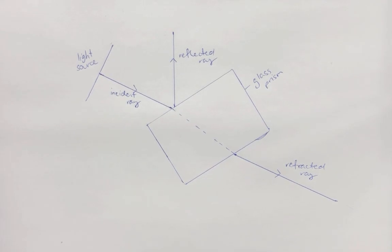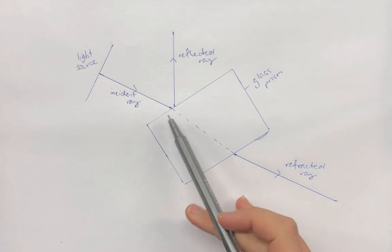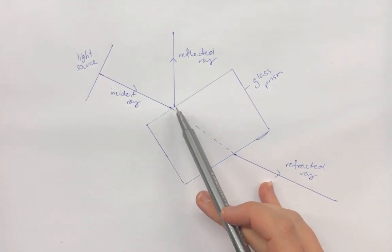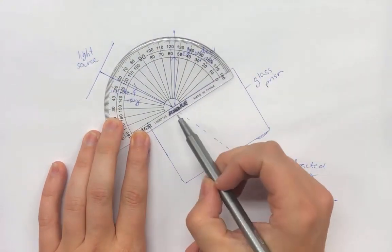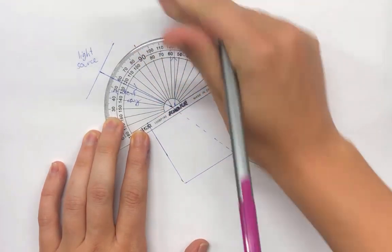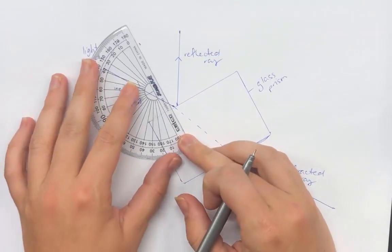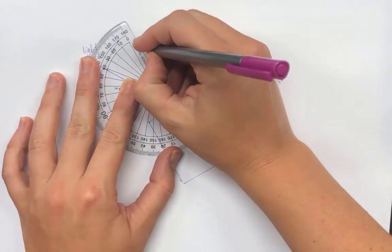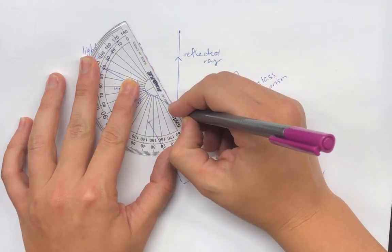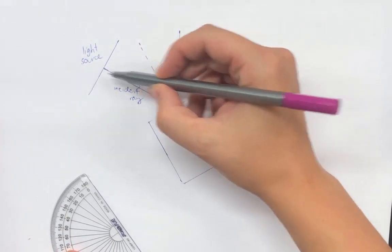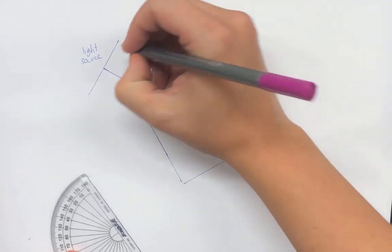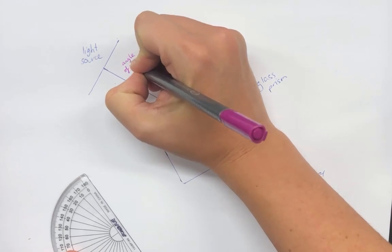Now to work out what the angle of incidence is and the angle of refraction. Similar to when we did the angle of reflection before, we need to draw in our normal and the normal is always at 90 degrees to the surface of the medium that the light is hitting or passing through. I'm going to set up my protractor here where the incident ray meets the glass prism. And at 90 degrees, I'm going to draw a line. The angle of incidence is the angle that the incident ray makes with the normal.